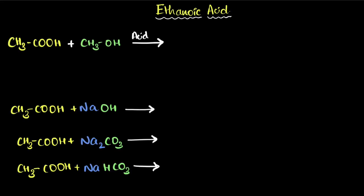Let's summarize the reactions of ethanoic acid. Ethanoic acid has a carboxylic acid group. It's called ethanoic acid because there are two carbon atoms.